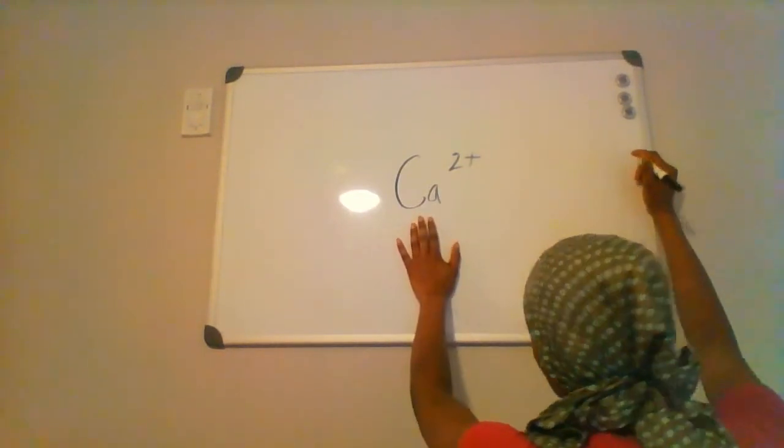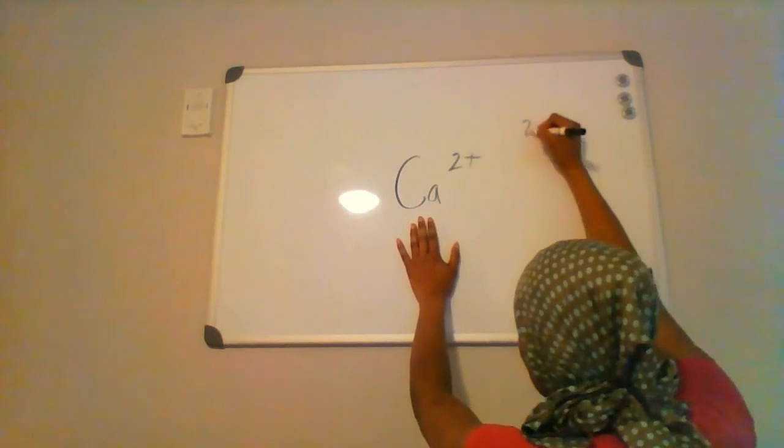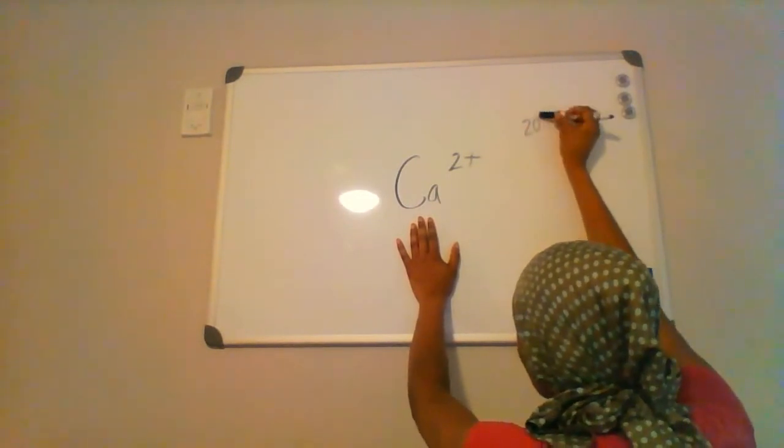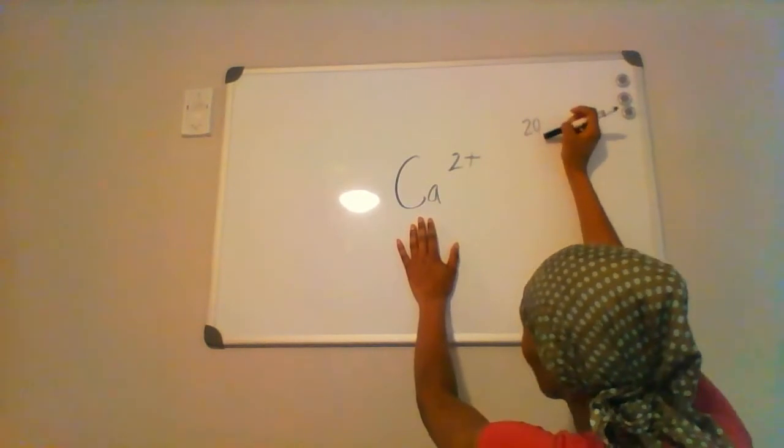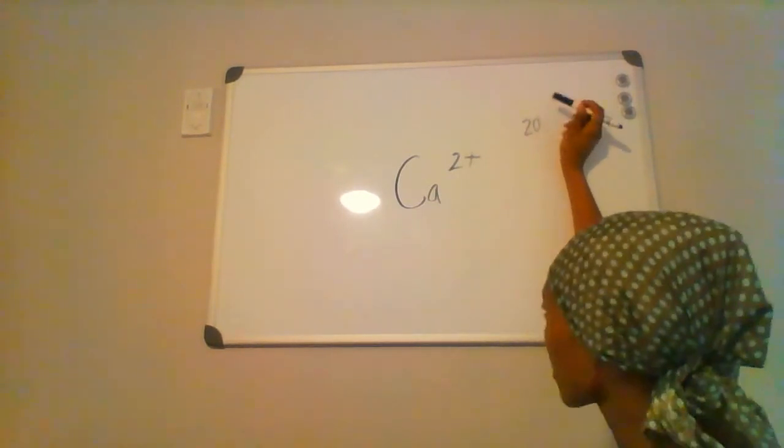The atomic number, the Z, is 20. So this represents the number of protons, therefore the neutral molecule would have to have 20 electrons orbiting.